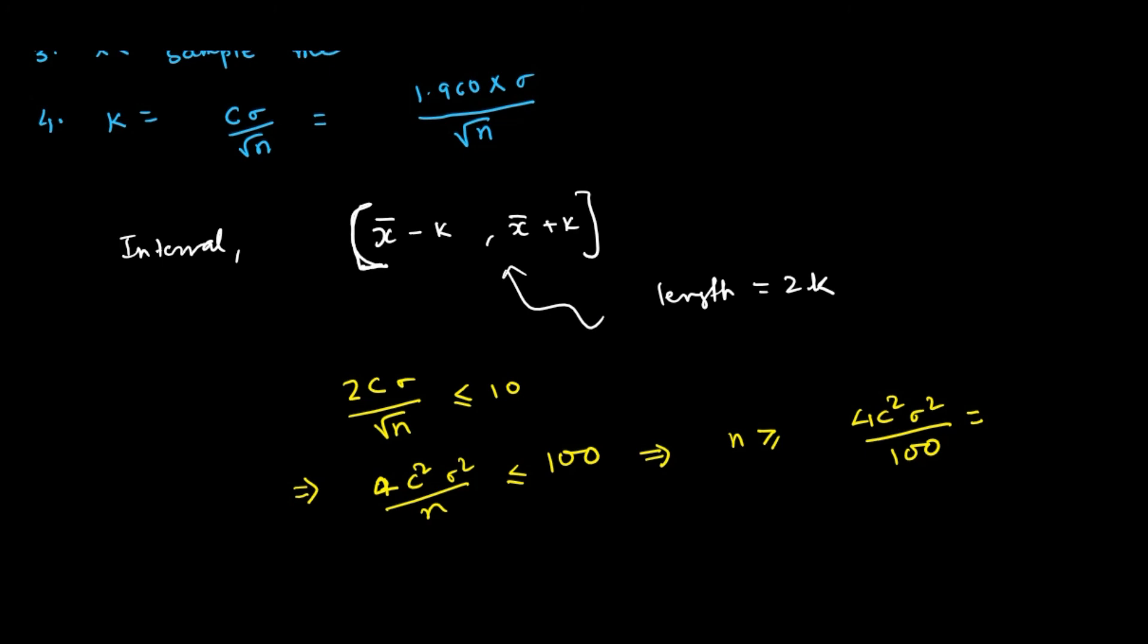So 4 times c square, so c is 1.960, times sigma square is 144. So it is coming 22.21, 22.13. So n is bigger than this, so n equals to 23.